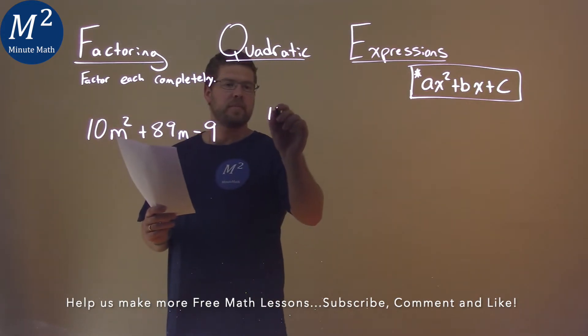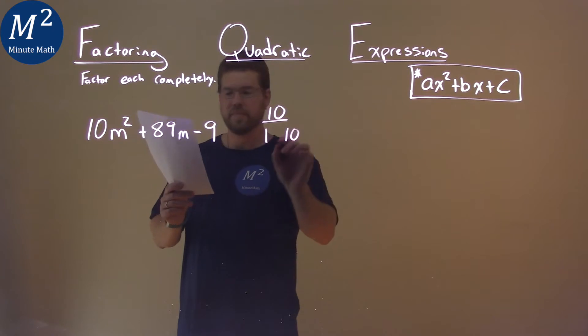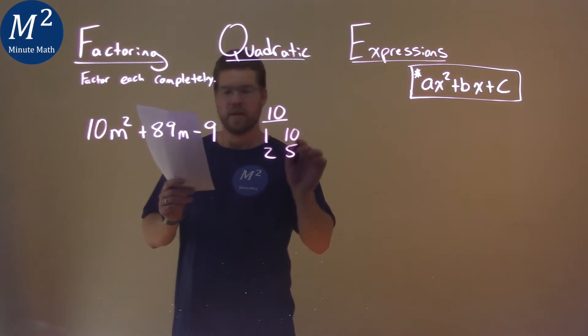We look at our a value being 10. The two numbers that multiply to be 10 are 1 and 10, and 2 and 5.